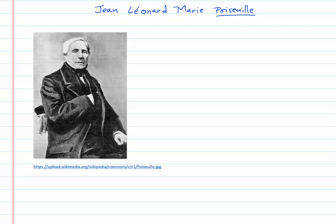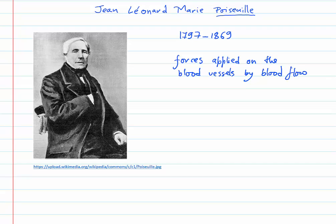Poiseuille, after whom the unit poise is named, was a physicist and physiologist who lived between 1797 and 1869. He worked on the forces applied on blood vessels by blood flow, studying the flow of human blood in narrow tubes, and came up with the Poiseuille equation. This is also known as the Hagen-Poiseuille equation, co-crediting the two inventors, and was derived around 1838.